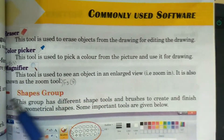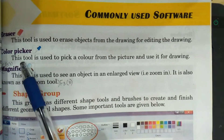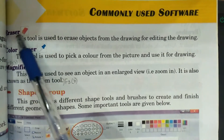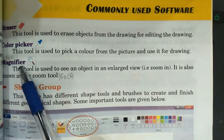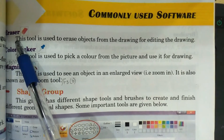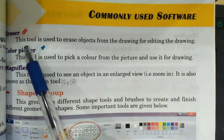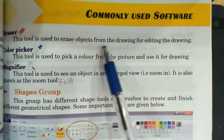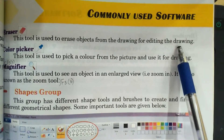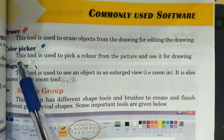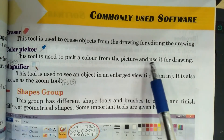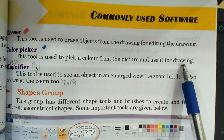The next three tools are eraser, color picker, and magnifier. First, the eraser tool — this tool is used to erase objects from the drawing for editing. Color picker — this tool is used to pick a color from the picture and use it for drawing.